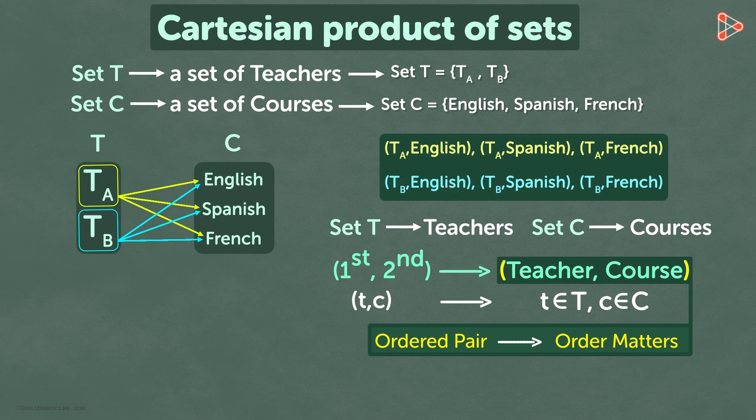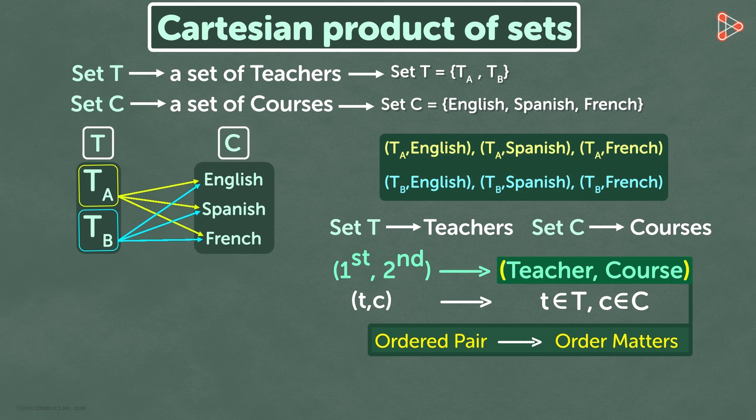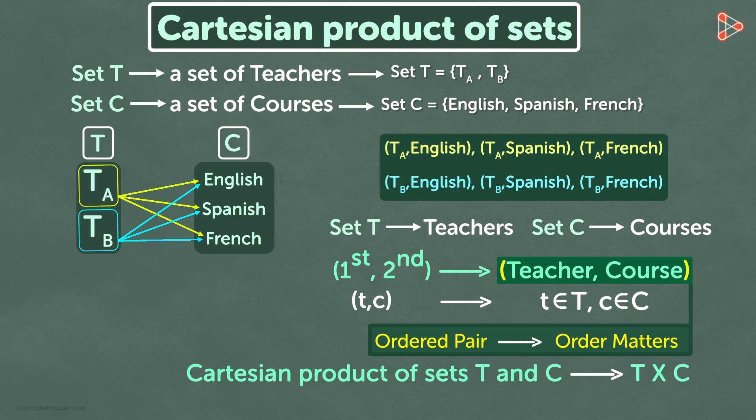This complete set of ordered pairs of teacher comma course is nothing but the Cartesian product of sets T and C. Cartesian product is written as T cross C. T cross C is also a set.